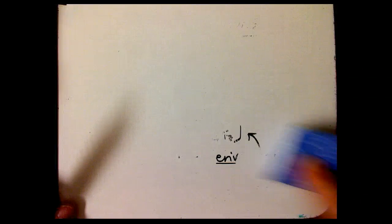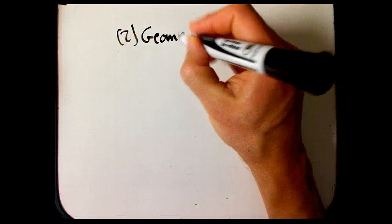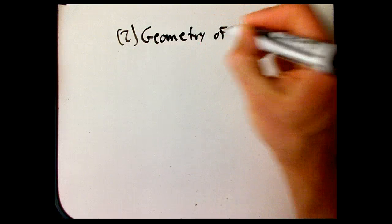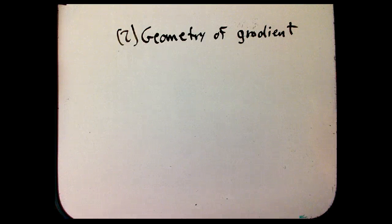So that's one hint that we're doing something wrong. And a related hint is the geometry of the gradient. Now you might think, wow, the geometry of the gradient, that was one of the coolest things about it. But there's a couple of things that are a little bit weird about that.